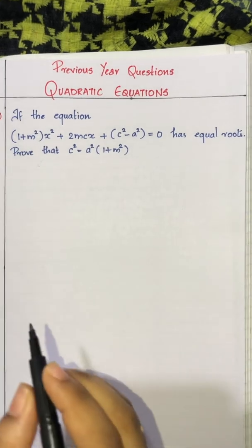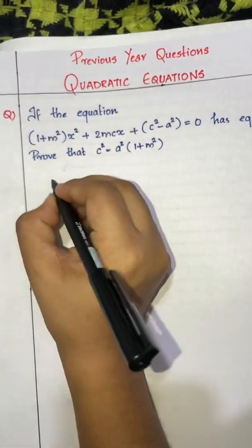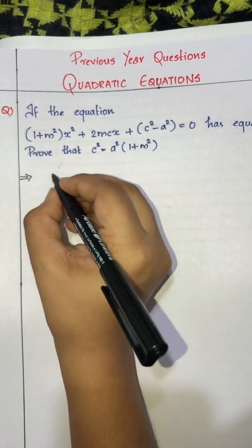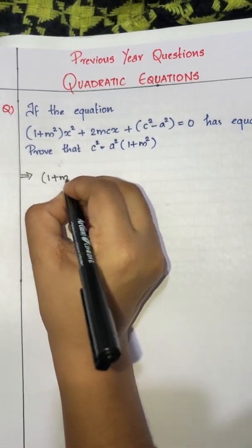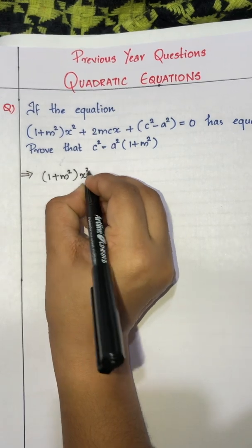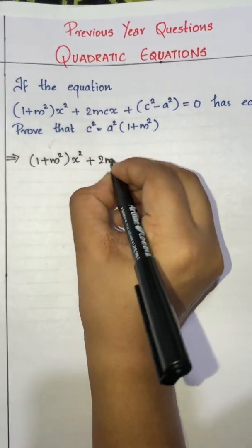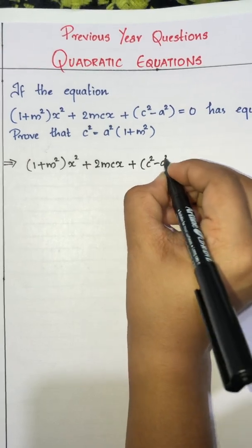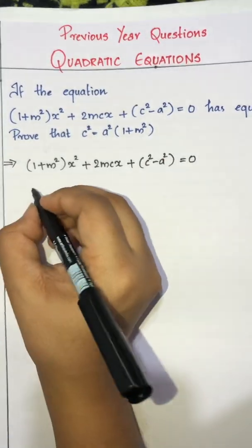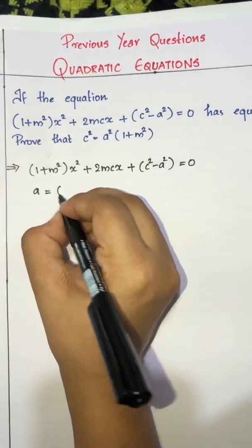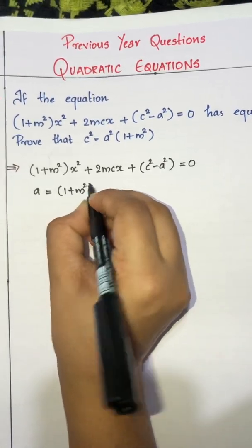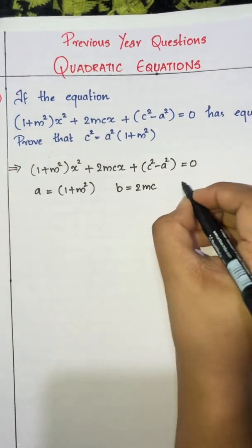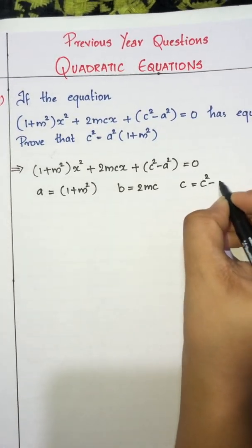So let us start. For the equation (1 + m²)x² + 2mcx + c² - a² = 0, here we identify that A = 1 + m², B = 2mc, and C = c² - a².